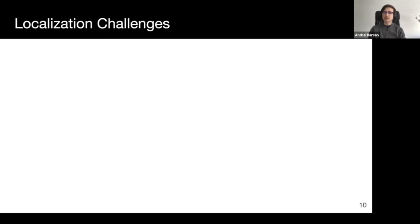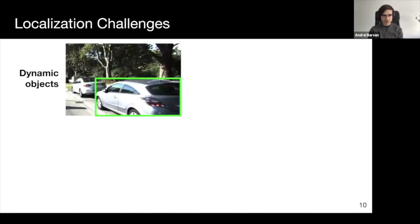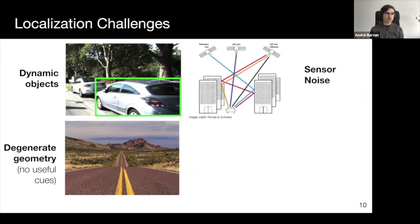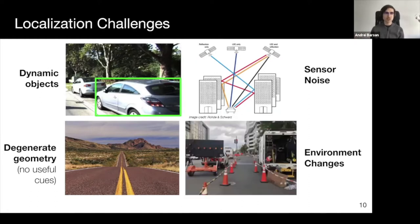Localization systems must be robust to the presence of dynamic objects, which are irrelevant to localization. In dynamic busy city scenes, there are a very large number of such occluders. Geometrically degenerate areas, which lack distinctive geometric cues, can also be problematic, as observations cannot be uniquely aligned to the map. Sensor noise affects all sensors in different ways. Multipath effects can affect both GPS and LiDAR and cause difficulties localizing. Finally, environmental changes such as construction mean that localizers must be able to adapt to cases where maps become outdated.